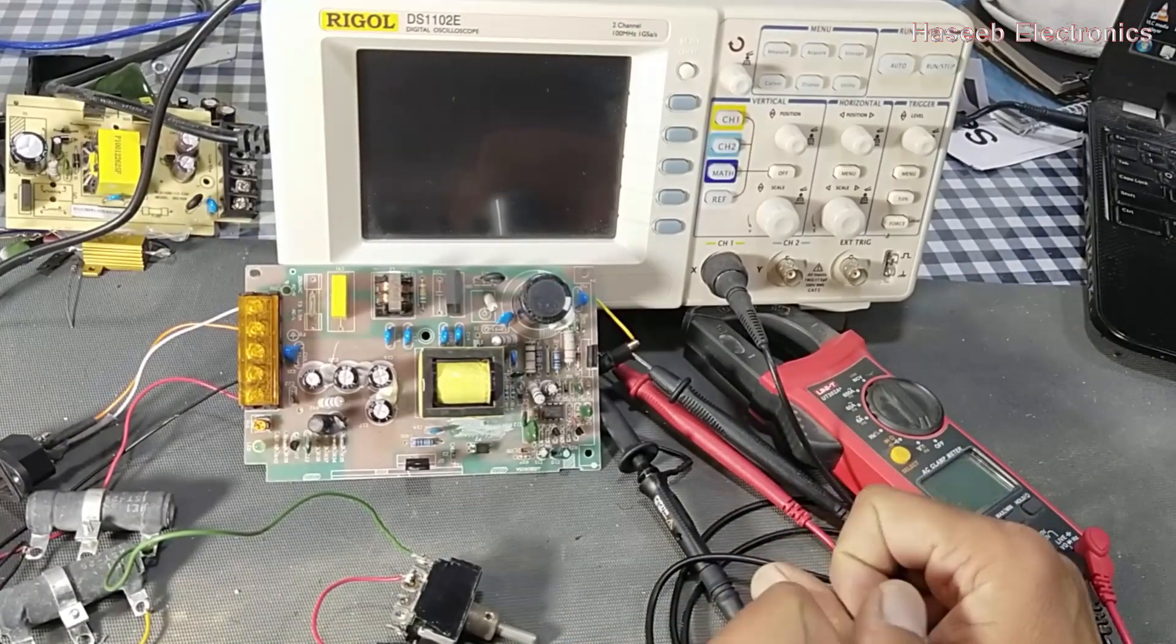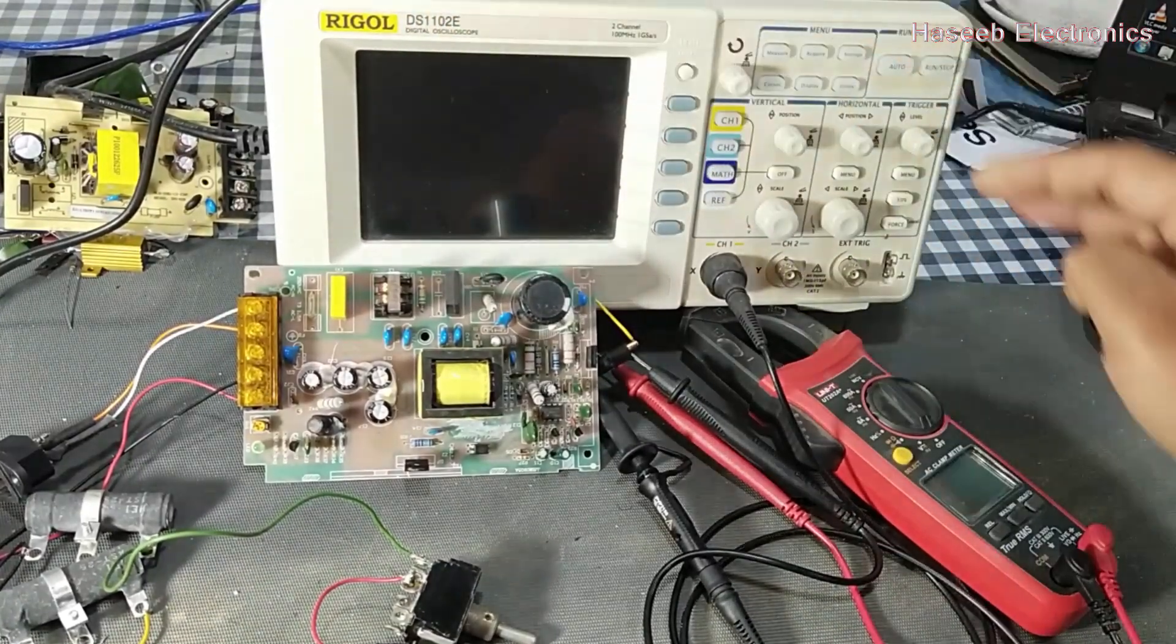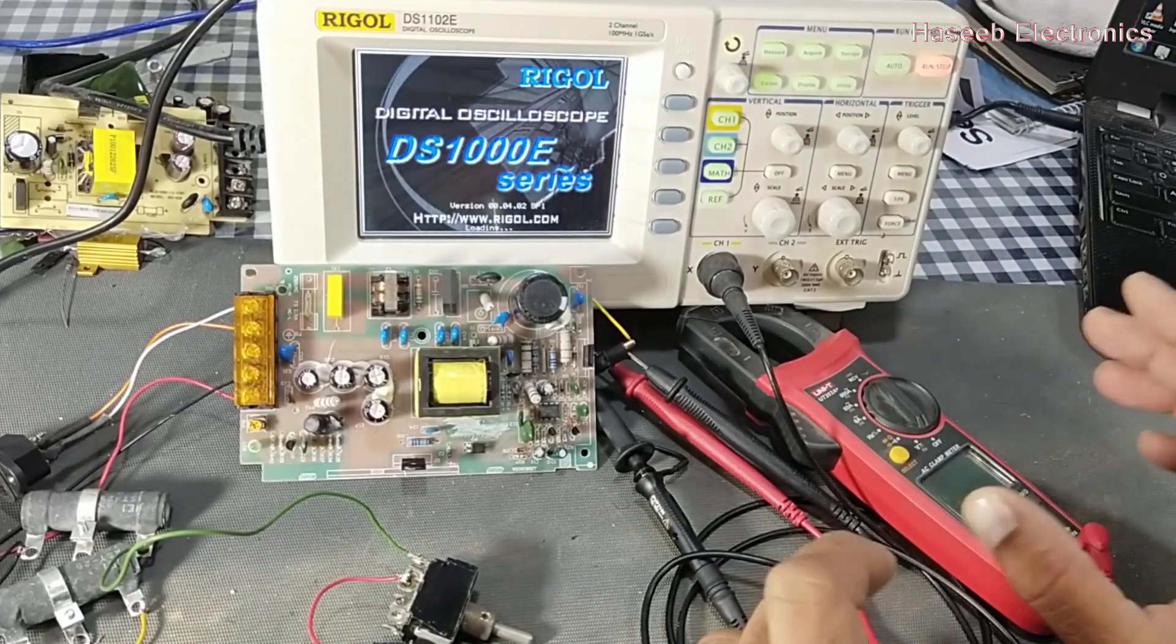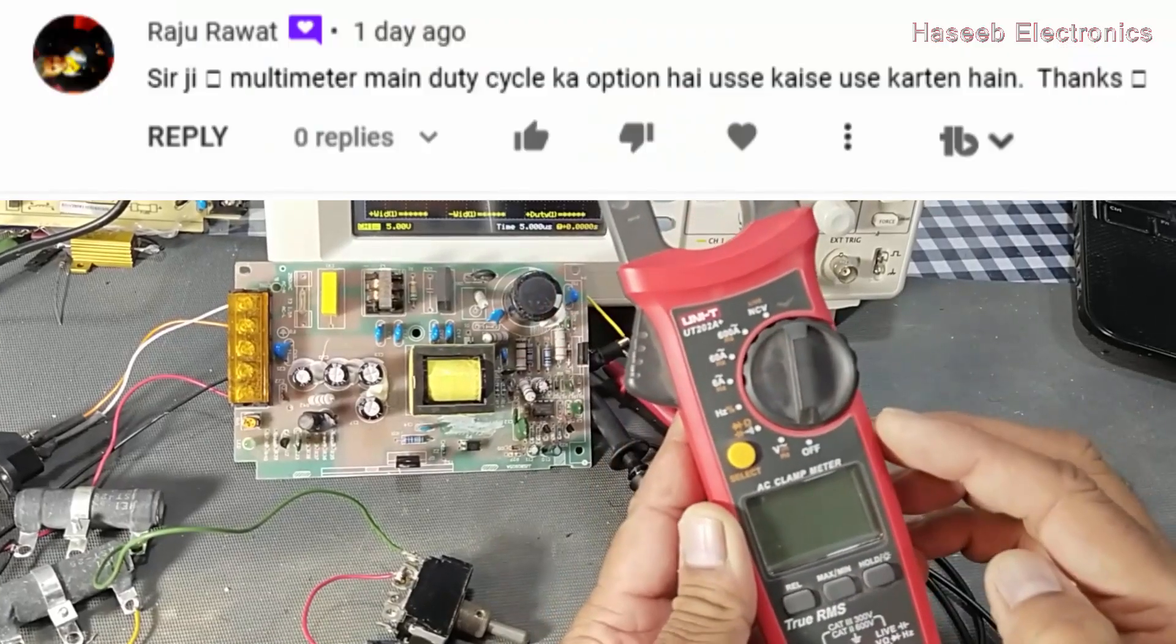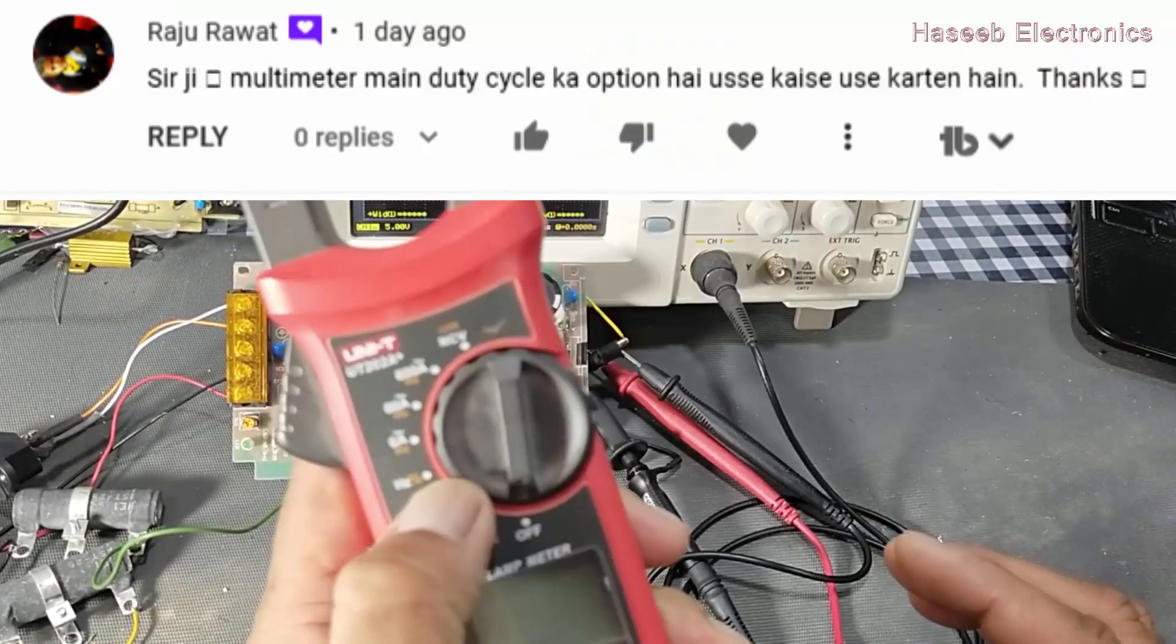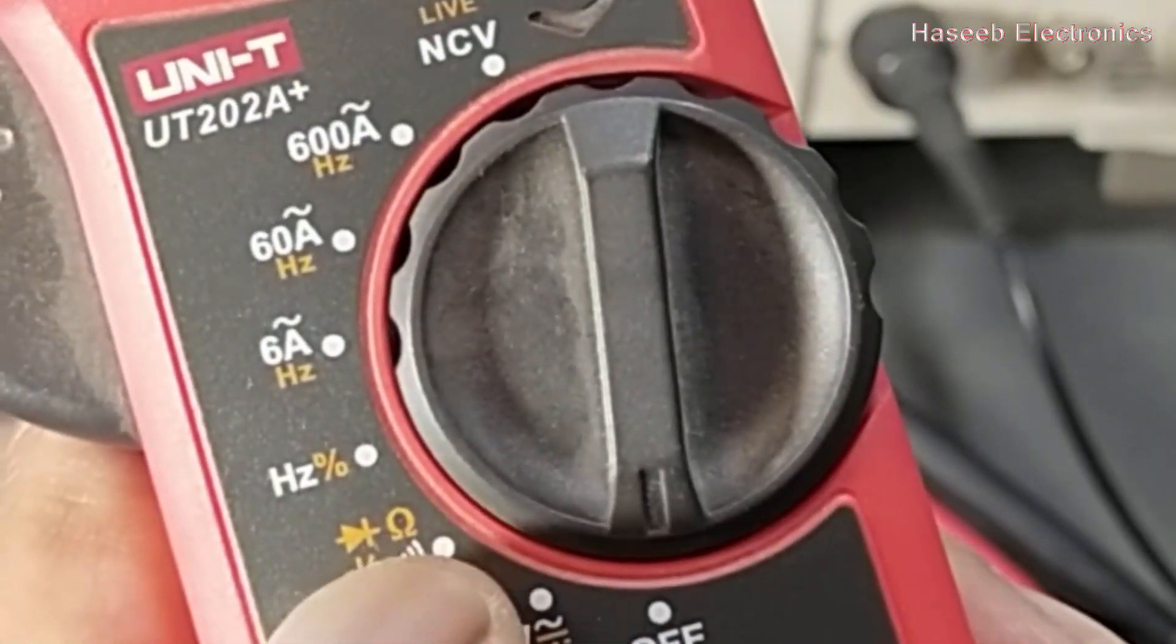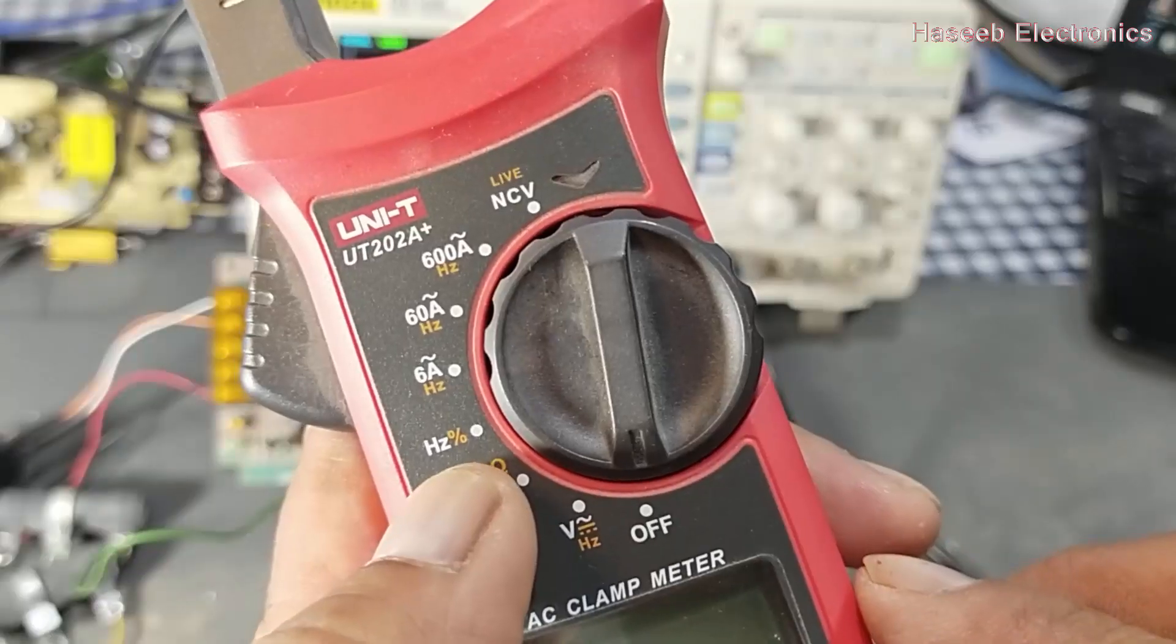Assalamualaikum warahmatullahi wabarakatuhu friends, welcome back to my channel. In this video, we are going to test duty cycle using a multimeter. It is a question from one of my viewers - how we can use this duty cycle option on the multimeter. Here we have Hz and percent options. Hz is the frequency or hertz option, and then we have the percent option.